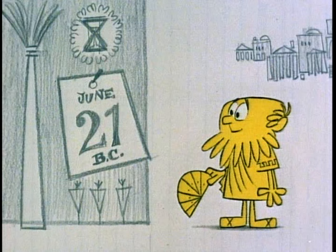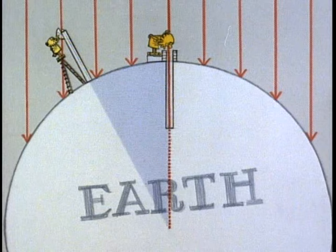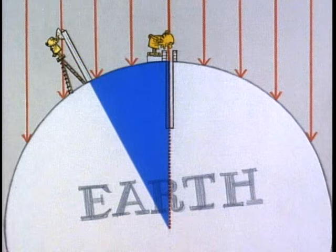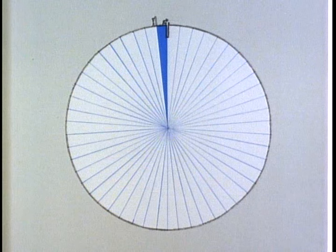On the next midsummer's day in Alexandria, he measured the shadow cast by an obelisk. Sunbeams travel in parallel lines, so the difference in angle had to result from the curvature of the earth. If the angle was 1/50th of a circle, then the distance around the world must be 50 times the distance from Alexandria to Syene.